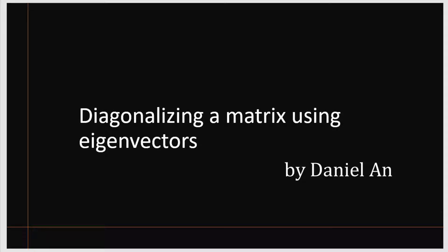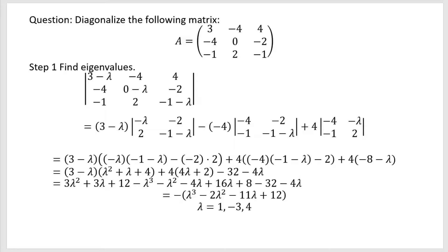I'm going to show you how diagonalizing a matrix using eigenvectors works by doing an example where the three eigenvalues are distinct. Now this 3 by 3 example should be general enough that if you see this, you will understand how diagonalization is done in general.